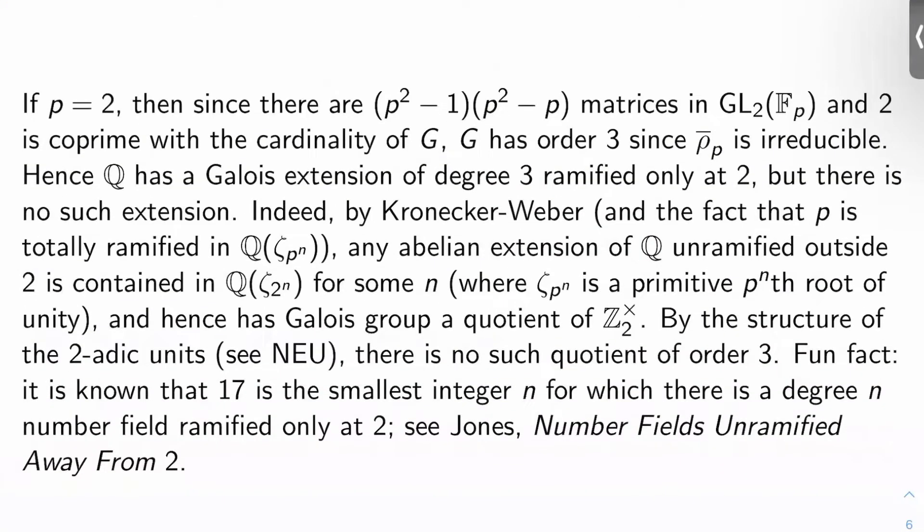P equals 2 is the easiest. A general fact to keep in mind here is that GL2 of Fp has P squared minus 1 times P squared minus P matrices. So if P is 2, we have six matrices here. But remember, we're assuming 2 is co-prime with the cardinality of G, the image of rho P bar. So G must have order 3. Well, it has to have order 3 or 1, but rho P bar is irreducible, so G has to have order 3.